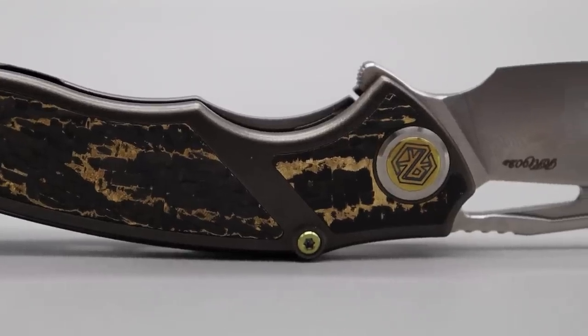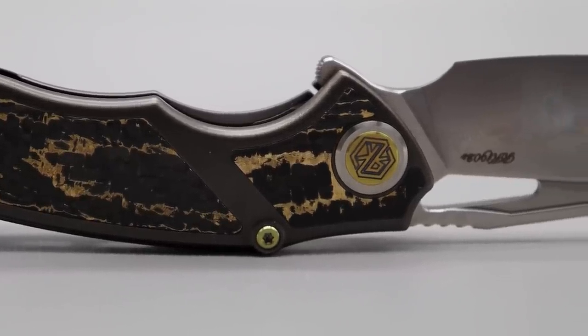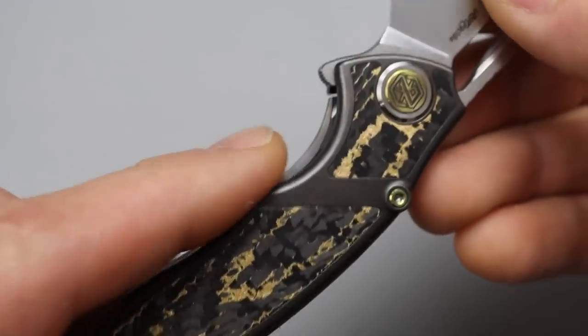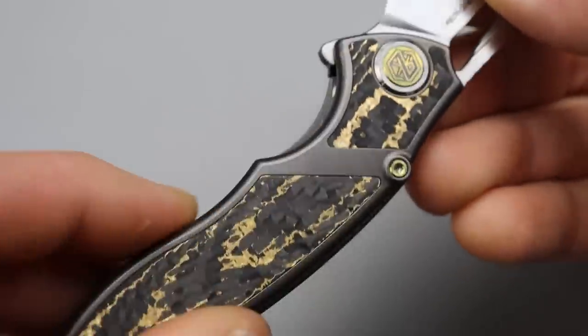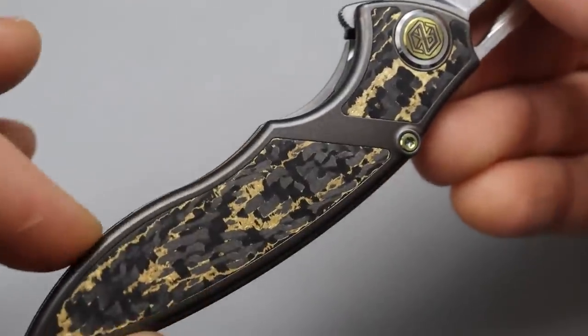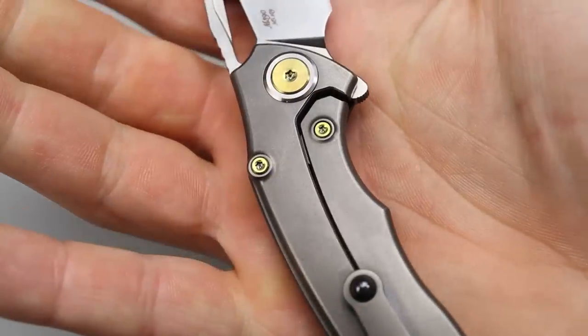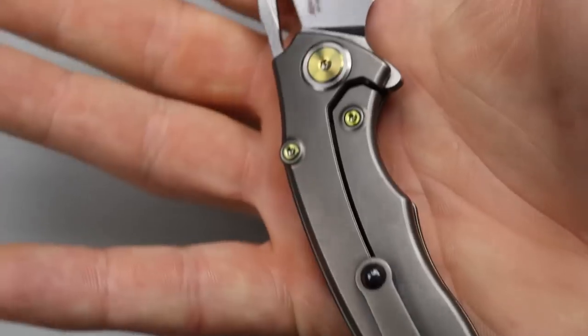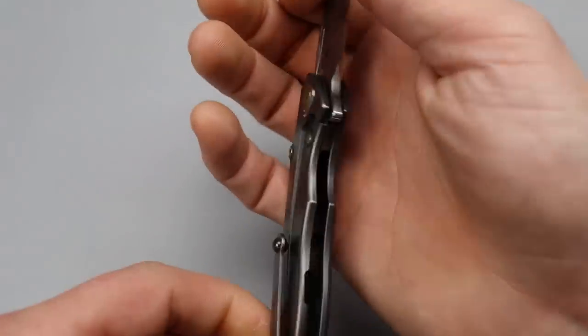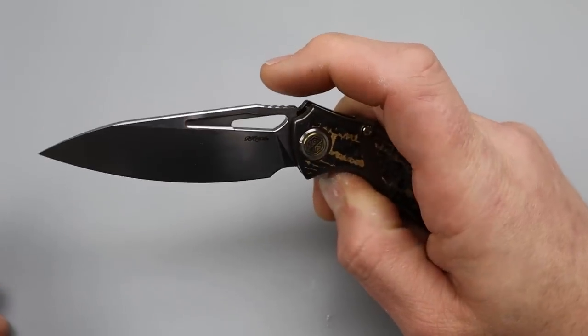Now, good access to the lock bar. They don't really have traction, but the texture of this allows it to have a little bit of traction, even though this is pretty smooth. Steel lock bar insert, and you can see how they anodized the hardware.